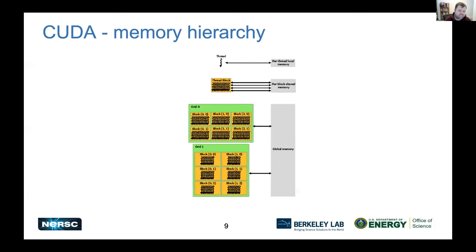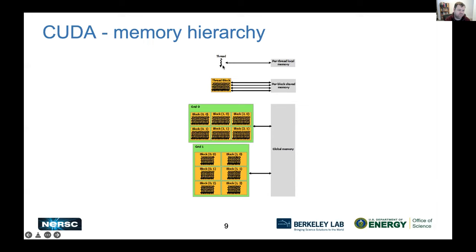That thread hierarchy comes with a corresponding memory hierarchy, as Jack touched upon. The global memory, or HBM, is the memory on the GPU accessible to different kernels — multiple kernels or different grids can each access that global memory. Then zooming in, the shared memory Jack mentioned is private to a particular thread block within a grid. And even finer, each thread itself has a very small amount of per-thread local memory.